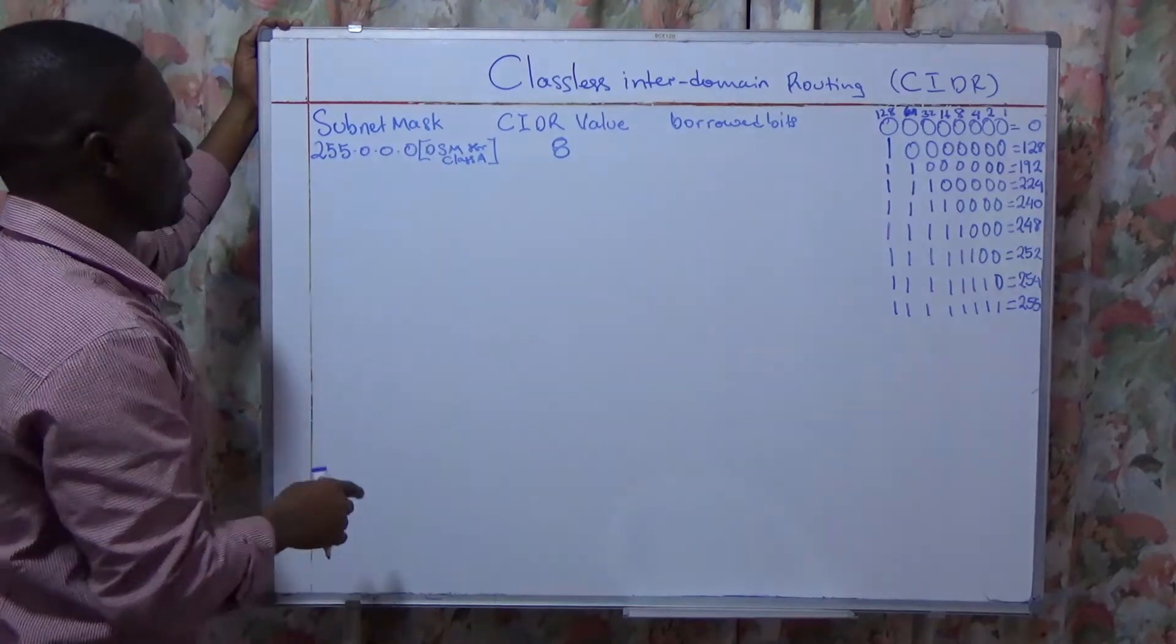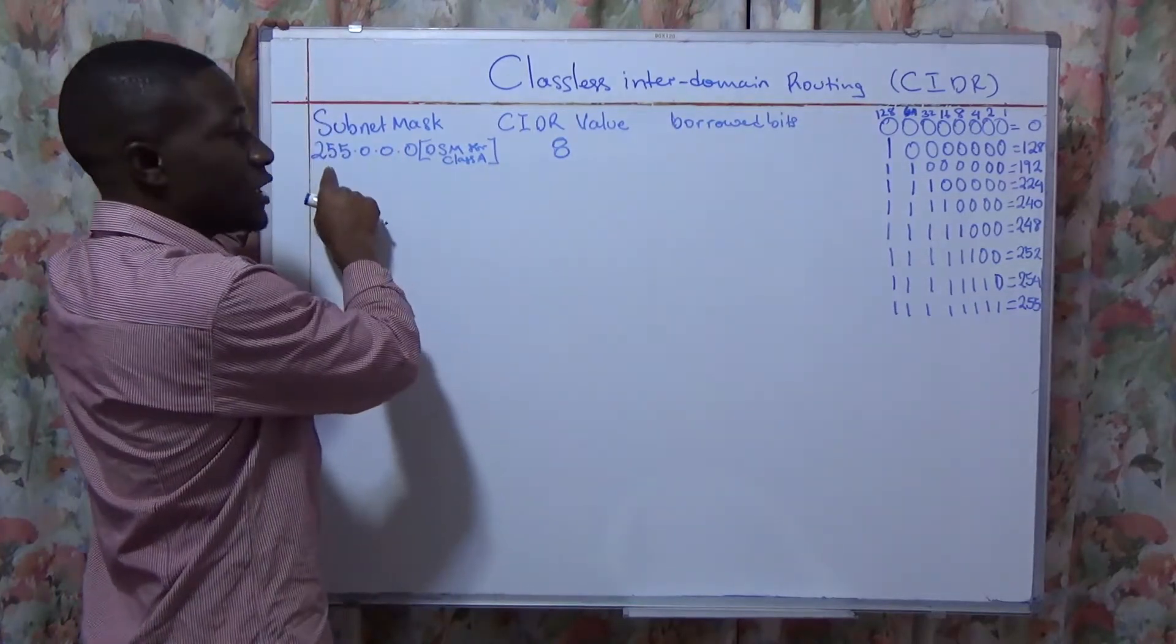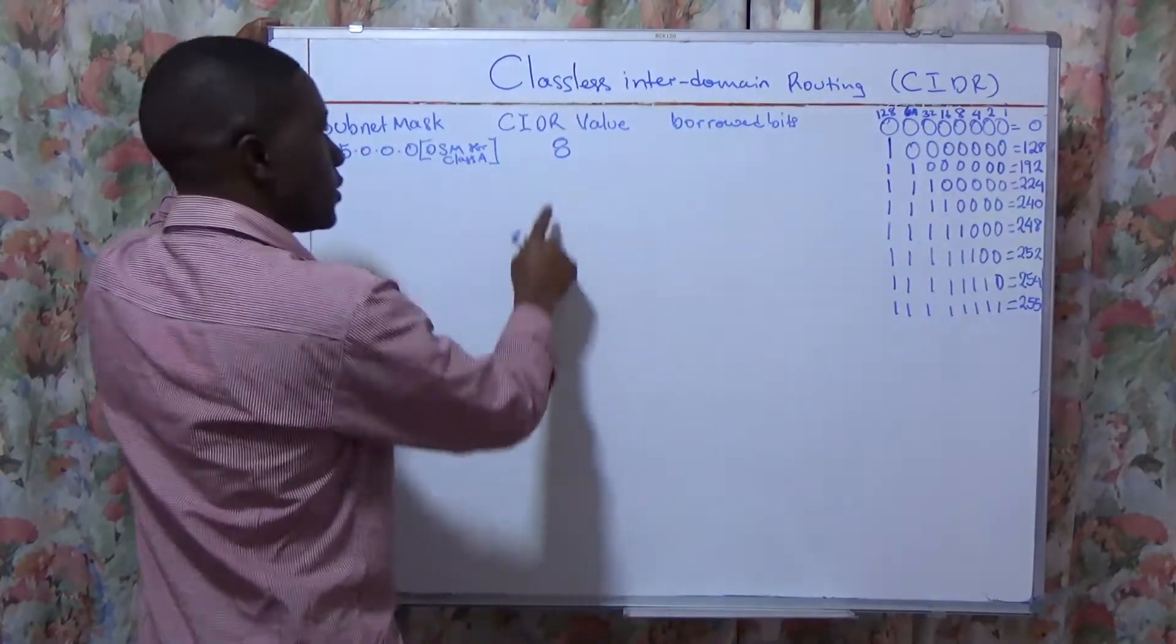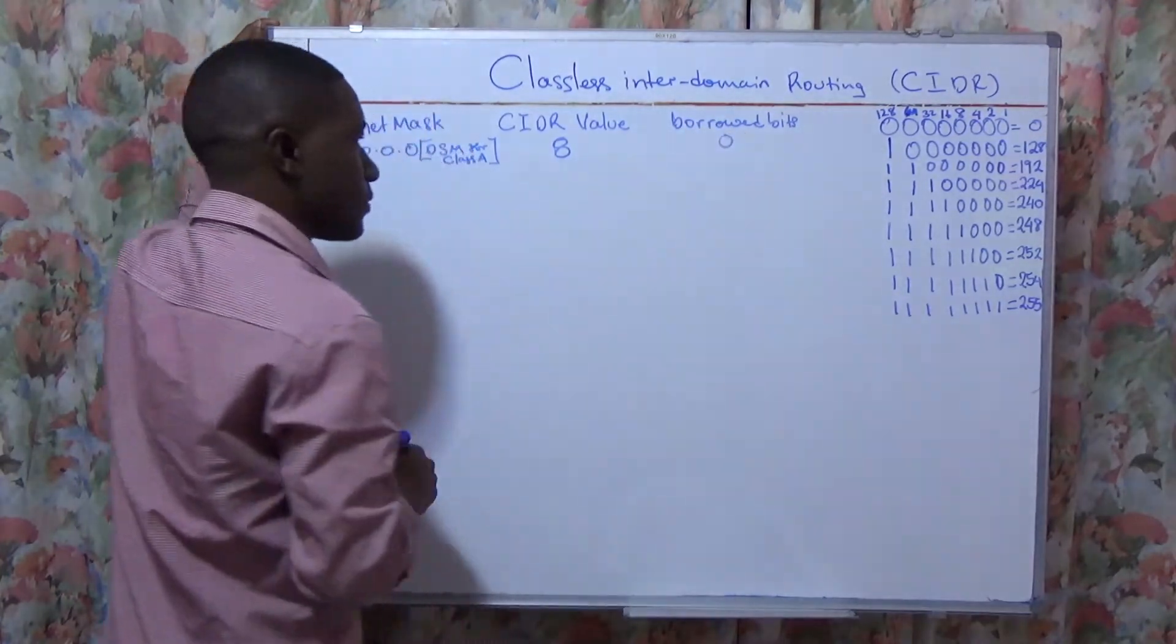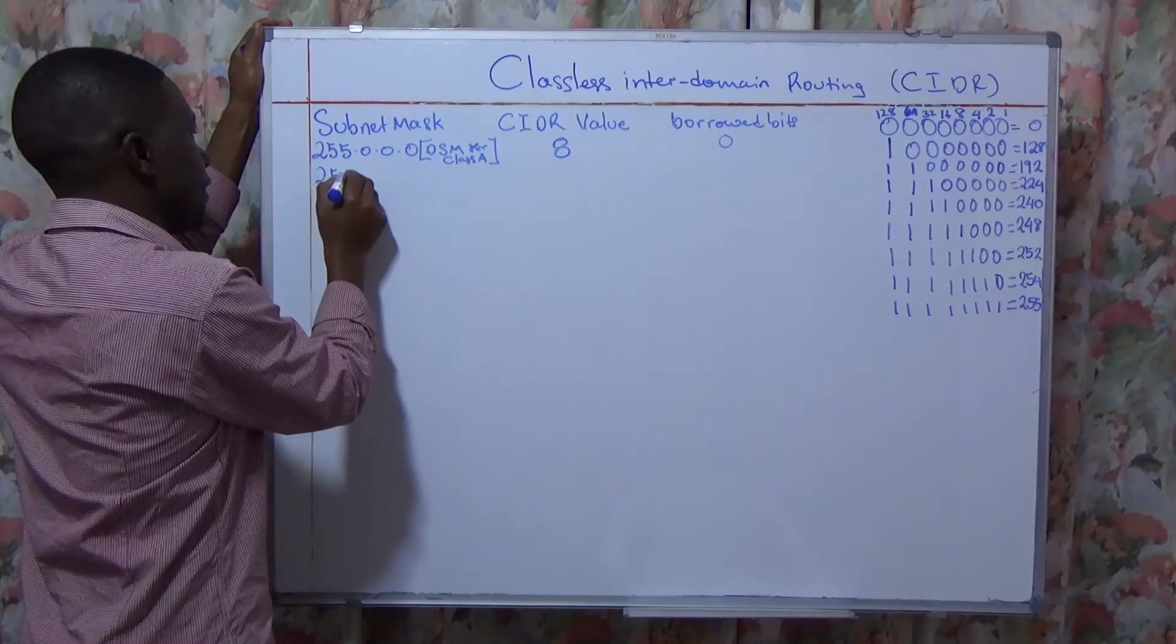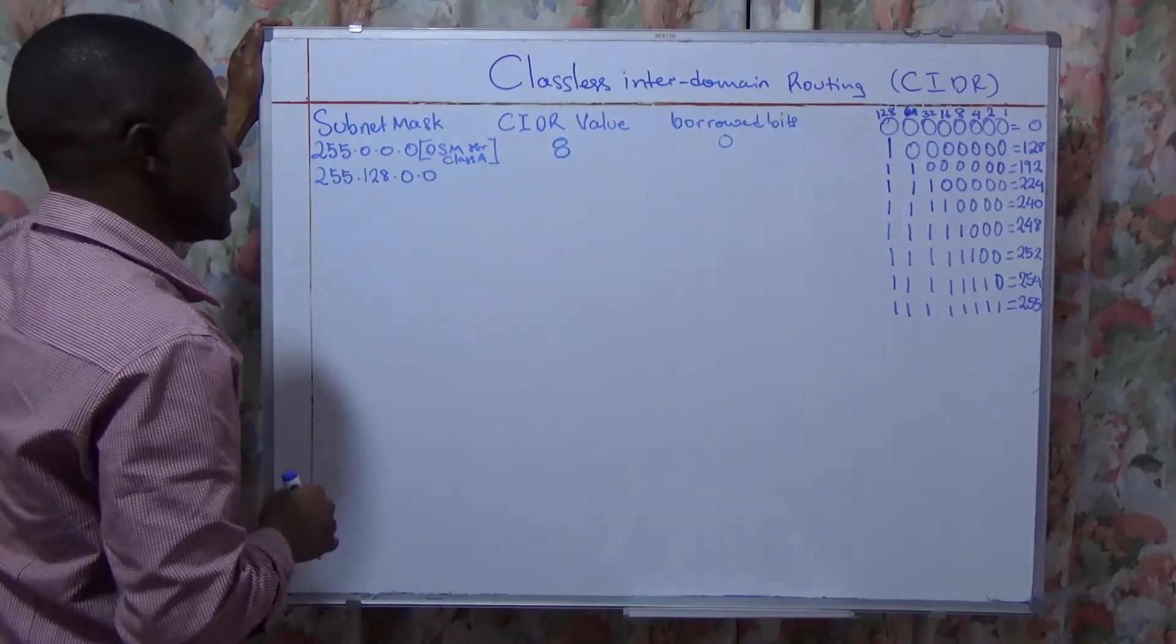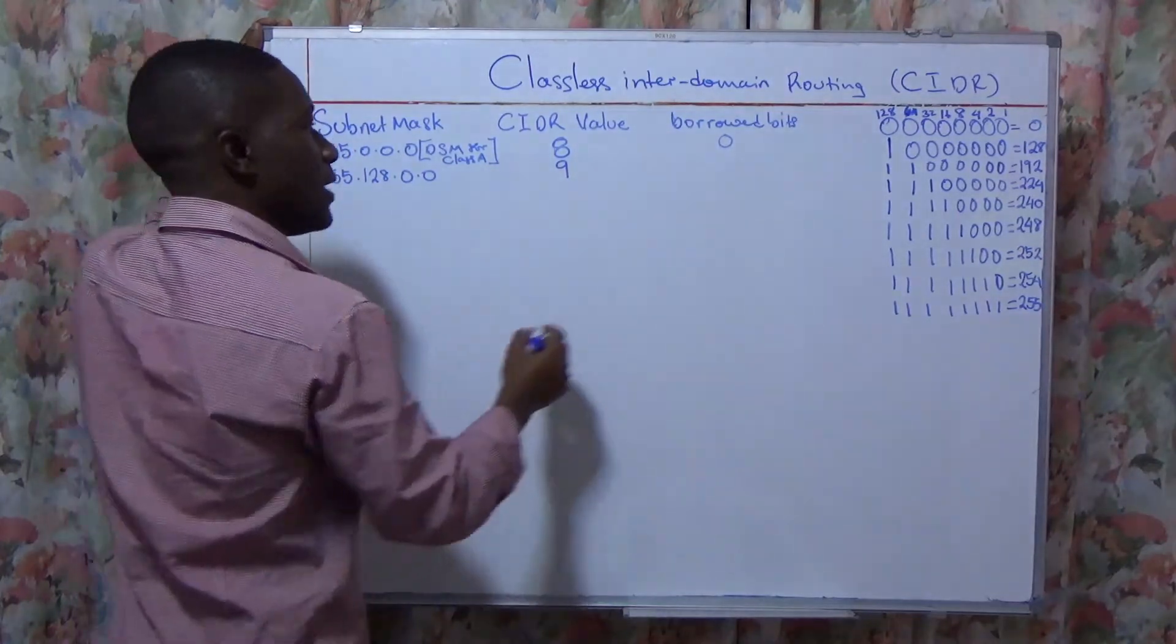And why 8? Because it's only the first octet that is being used to its maximum. All the bits are used, so here the CIDR value is 8 and the borrowed bits are 0. Now let us see another subnet mask: 255.128.0.0. And what does that mean? It means that at this level the CIDR value is /9 and the borrowed bits are 1.